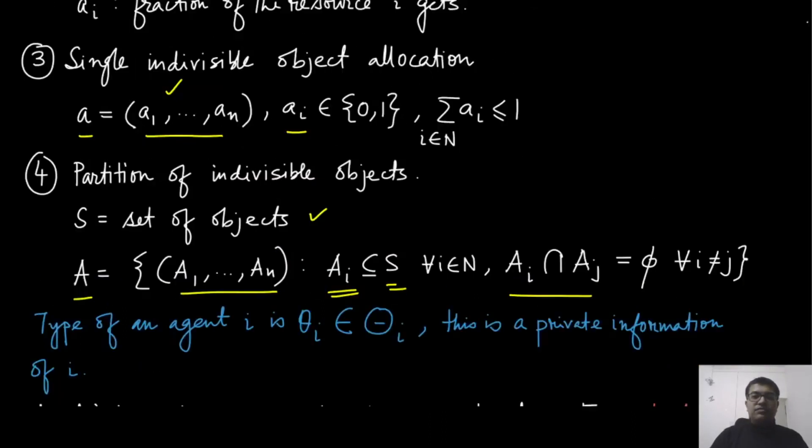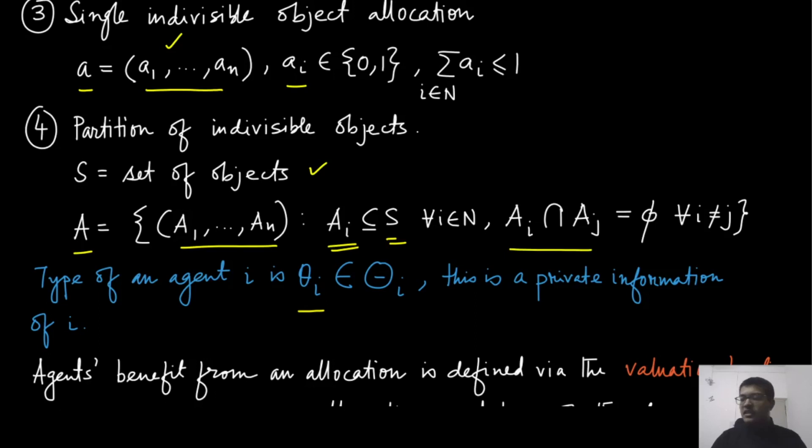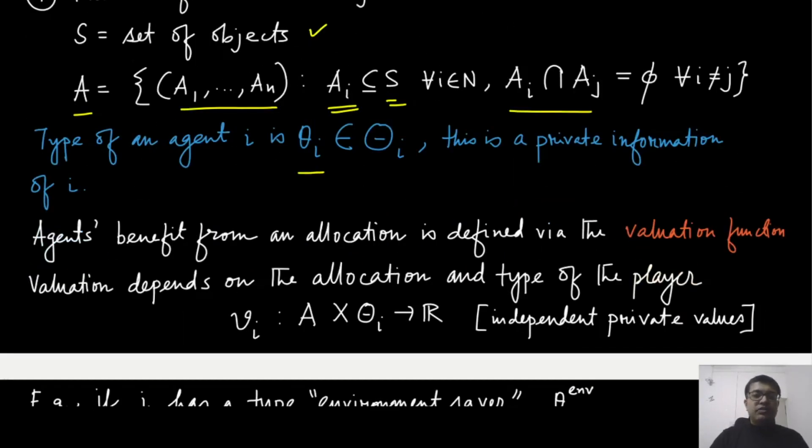Now in the context of mechanism design, we always talked about the type. It is again private information of player i. We are going to define a function called the valuation function, which depends on the allocation that has been decided and also the type, the private information of player i.